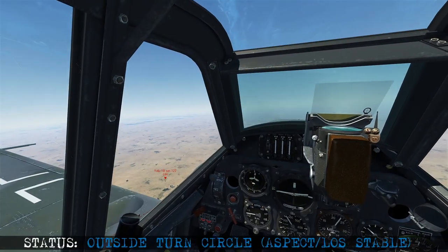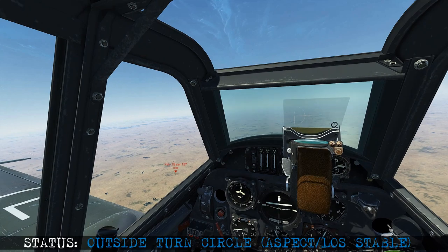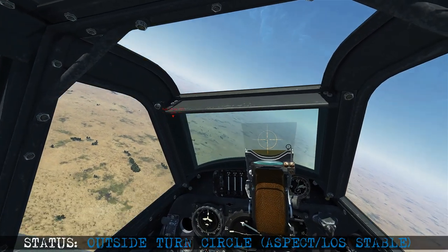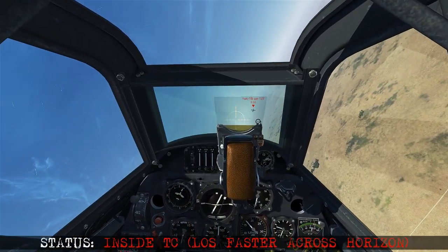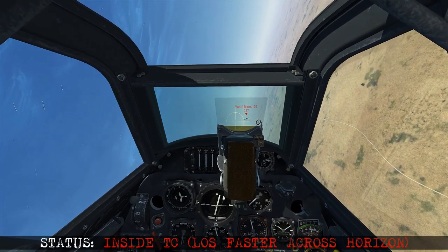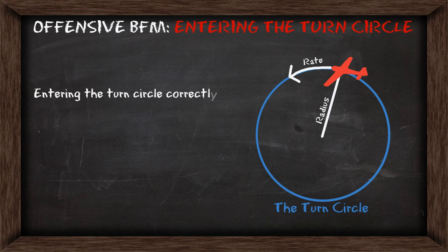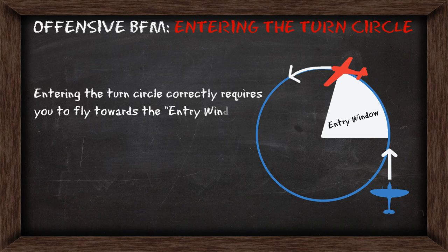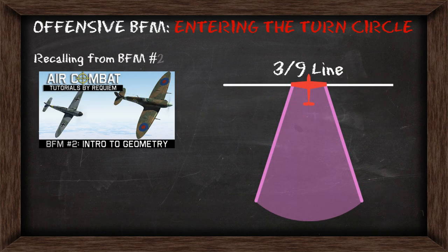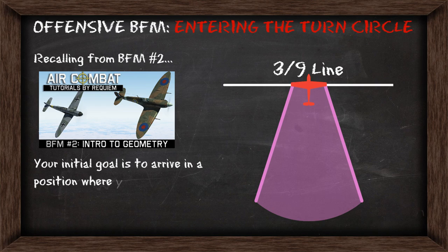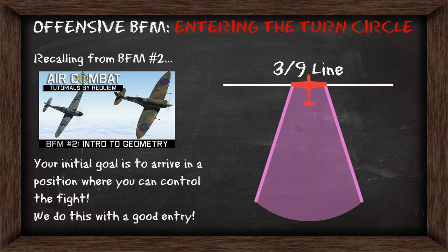Watching this in real time: we begin our diving attack, the bandit turns, rotates in position, aspect increases, and we see line of sight pick up across the horizon — we've entered his turn circle and aspect starts decreasing. Entering the turn circle correctly requires flying towards the bandit's entry window in lag pursuit. The closer the entry is to the centre of the turn circle, the more out-of-plane turning room you'll need to avoid overshooting. Your initial goal in BFM is to arrive in a position where you can control the fight, and a good turn circle entry is part of that.